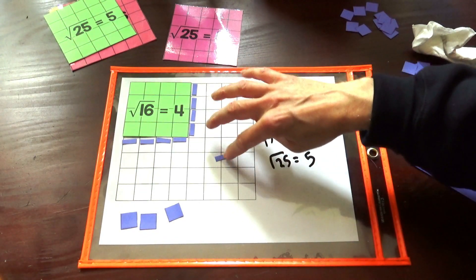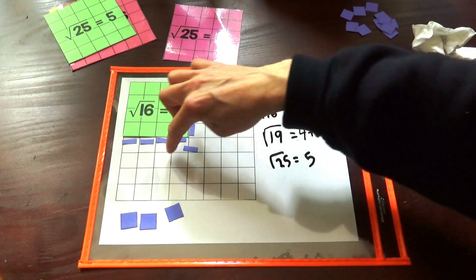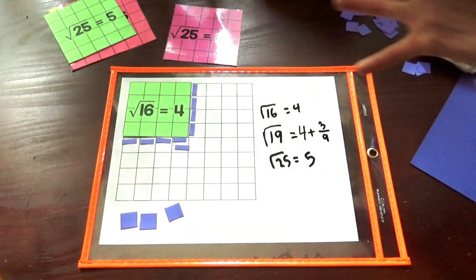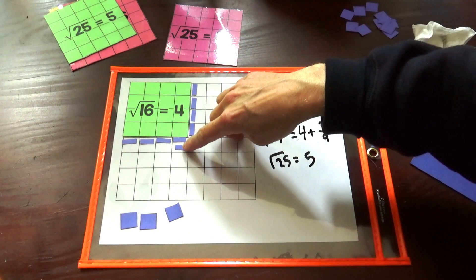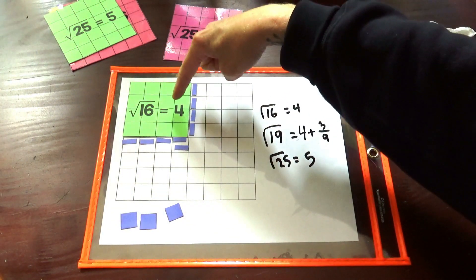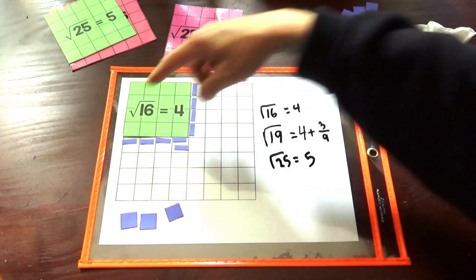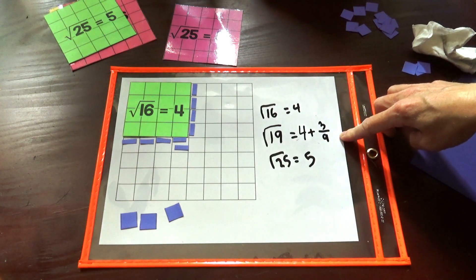We have a little corner here missing and that's, you know, this one we would have to then cut this one and spread it out. And it's not going to be exact because the square root of 19 is an irrational number. But you get the idea here that we have four and about one-third to approximate the square root of 19.